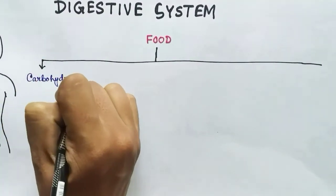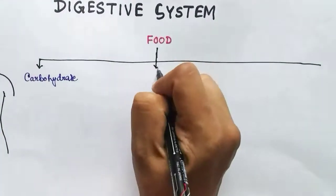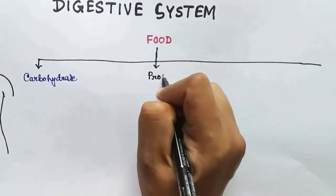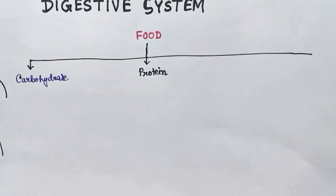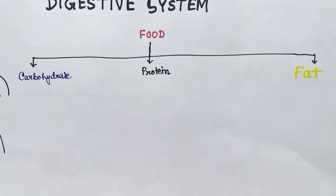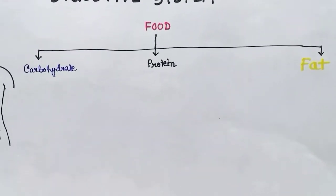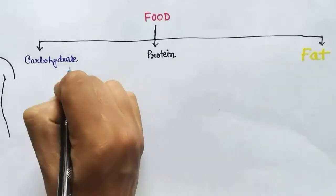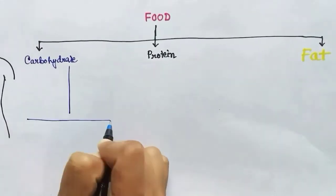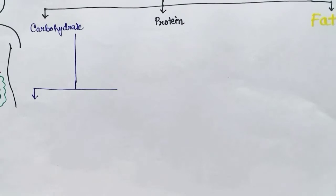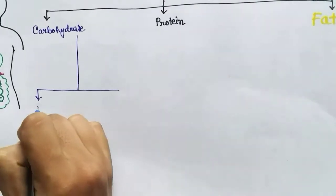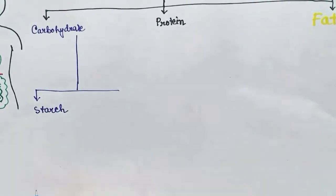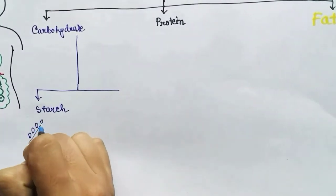If we divide the food into three categories, the three main categories will be carbohydrate, protein, and fat. Now let's understand what kind of bonds in carbohydrates have to be broken by the digestive system to absorb the molecules.